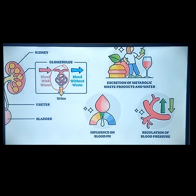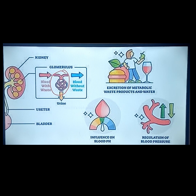The kidney also has influence on blood pH because our blood pH is dictated by the amount of acids or alkalines being released from our body. And there is the regulation of blood pressure, which is in relation to aldosterone and the RAAS activation — your renin-angiotensin-aldosterone system.